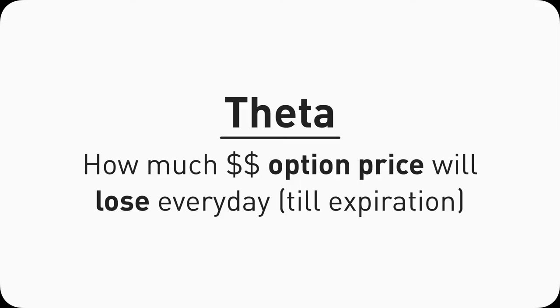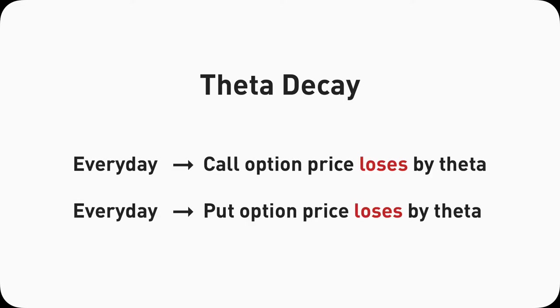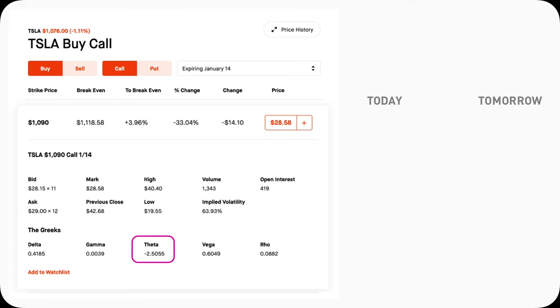As we mentioned in the previous video, theta is the time decay of the option prices. Basically, it describes how much money an option contract would drop with decay every day if the stock stays flat — this is called theta decay. It doesn't matter if an option contract is a call or a put; theta affects either of them in the same way. Let me quickly go over two examples on Robinhood. This Tesla 1090 out-of-the-money call has a theta of negative 2.5055, which means you can expect this option to drop $251 every day.